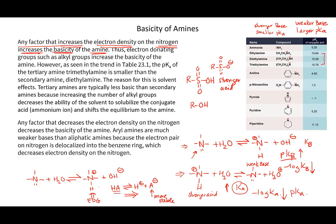If an electron-donating group pushes electron density into the positive nitrogen of an ammonium ion, it makes that ammonium more stable. I don't want to withdraw electron density - I want to push it into the positive charge. That makes the ammonium more stable and pushes the equilibrium to the right. So any statement that says anytime you increase the electron density of the nitrogen, you're going to make the amine more basic.